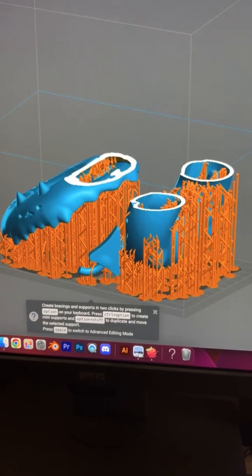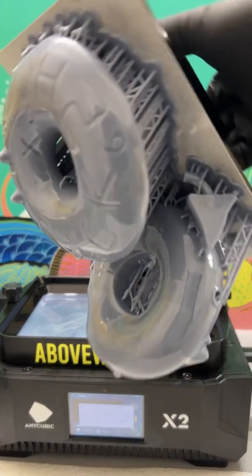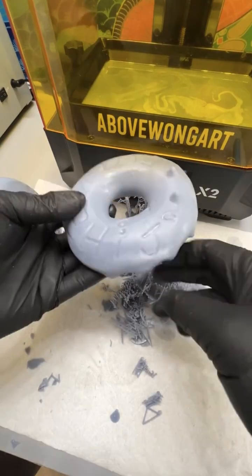Here's where I went wrong. I tried to save resin by hollowing out the model. There's a bunch of liquid resin trapped inside the donut. As I was making it, I wasn't thinking about it.